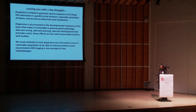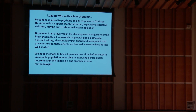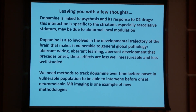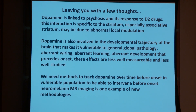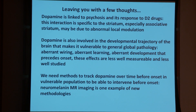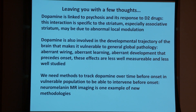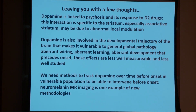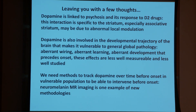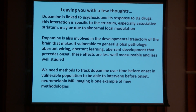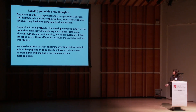I want to leave you with a few thoughts. Dopamine is linked to psychosis and its response to D2 drugs — we've shown this in vivo. This excess dopamine is only in the striatum, especially the associative striatum, but it's also involved in the developmental trajectory of the brain that makes it vulnerable to global pathology. It can contribute to aberrant wiring, aberrant learning because it's a learning signal, and aberrant development that precedes onset. We need methods to track dopamine over time before onset in vulnerable populations to intervene early. Neuromelanin MR imaging is one example of those methodologies we're hoping to develop.